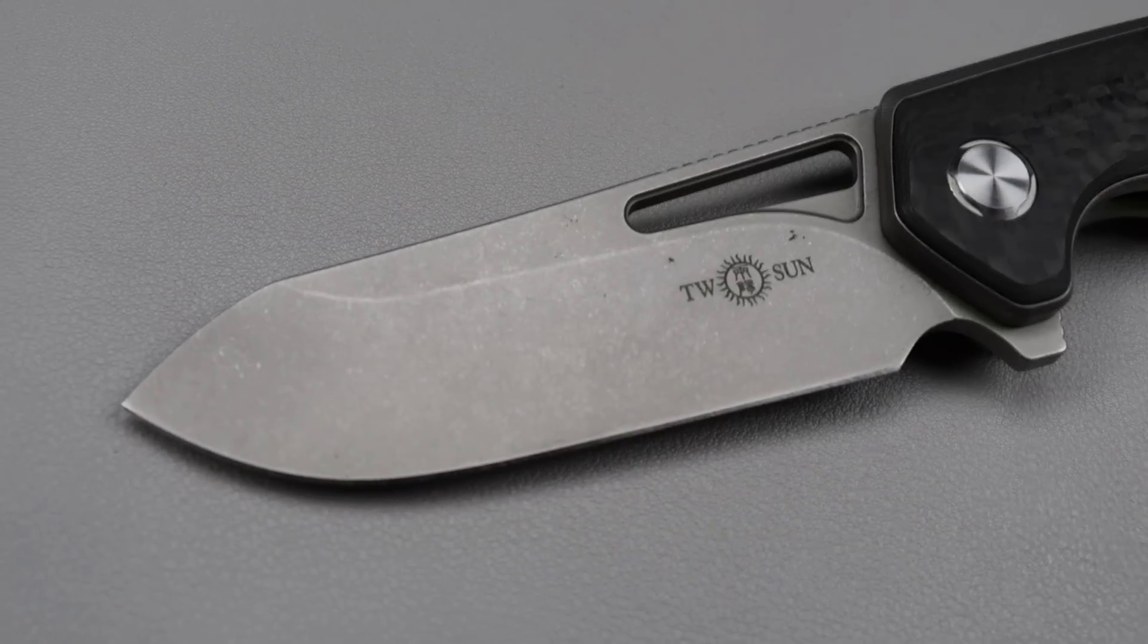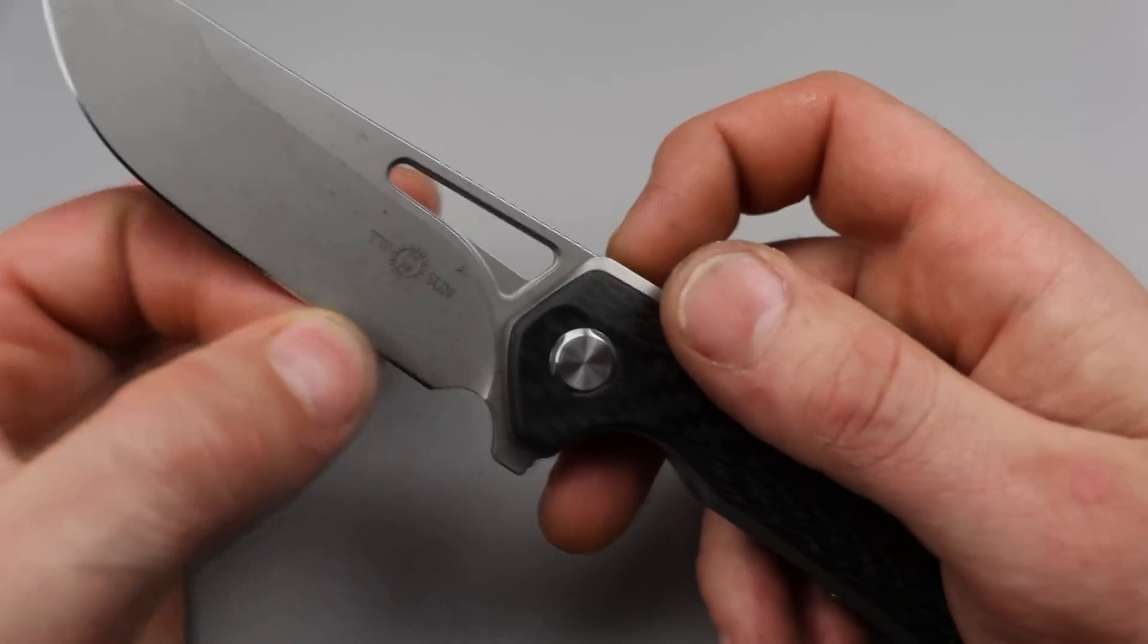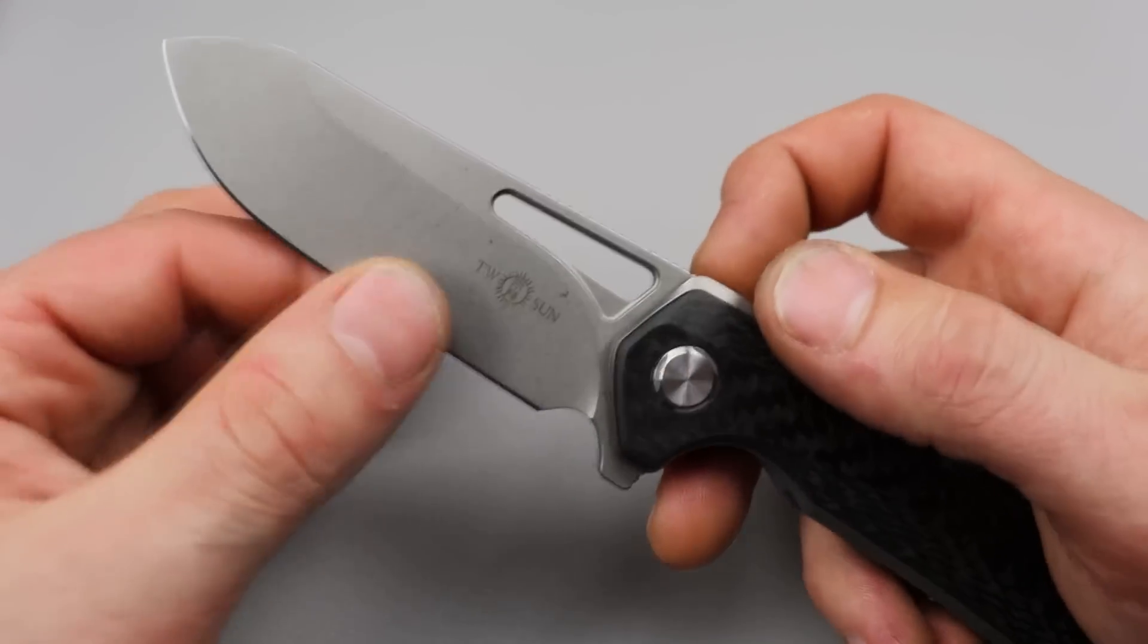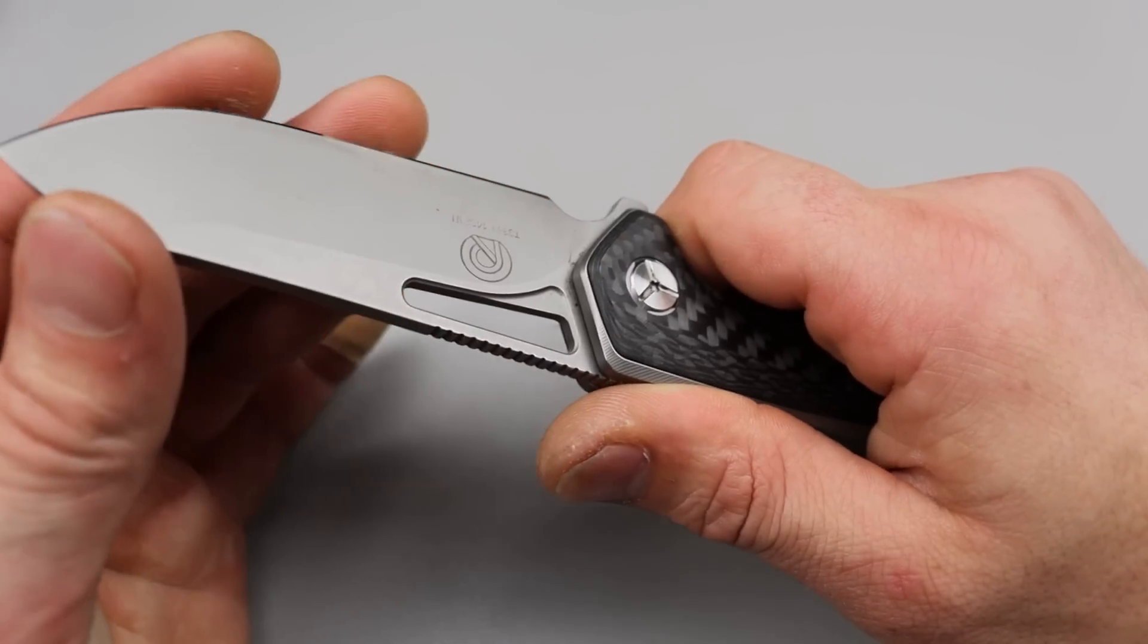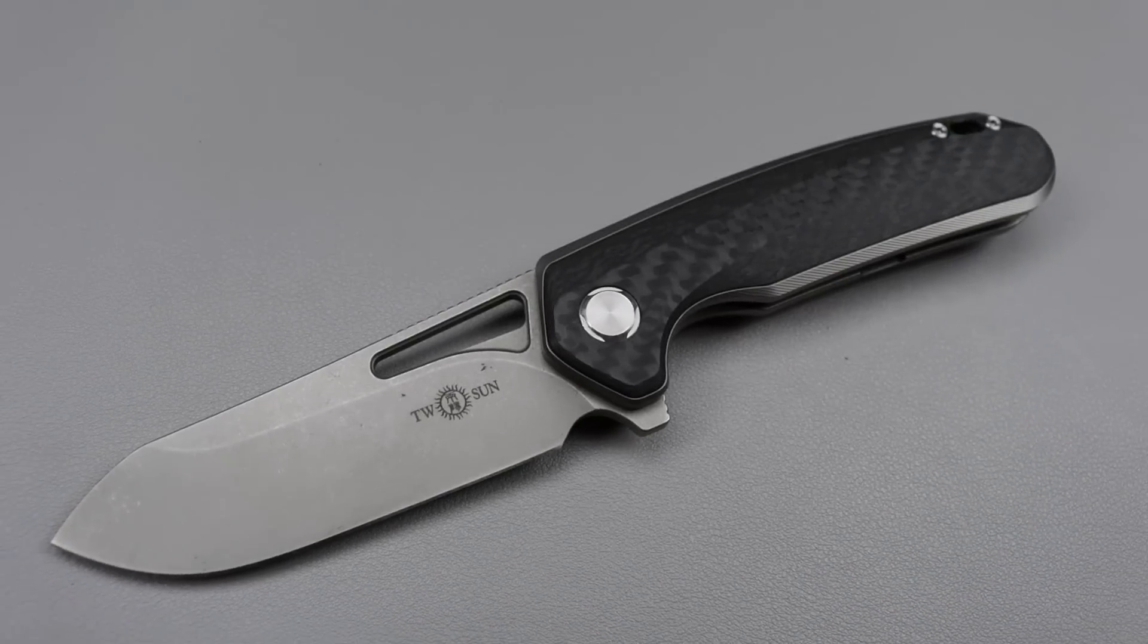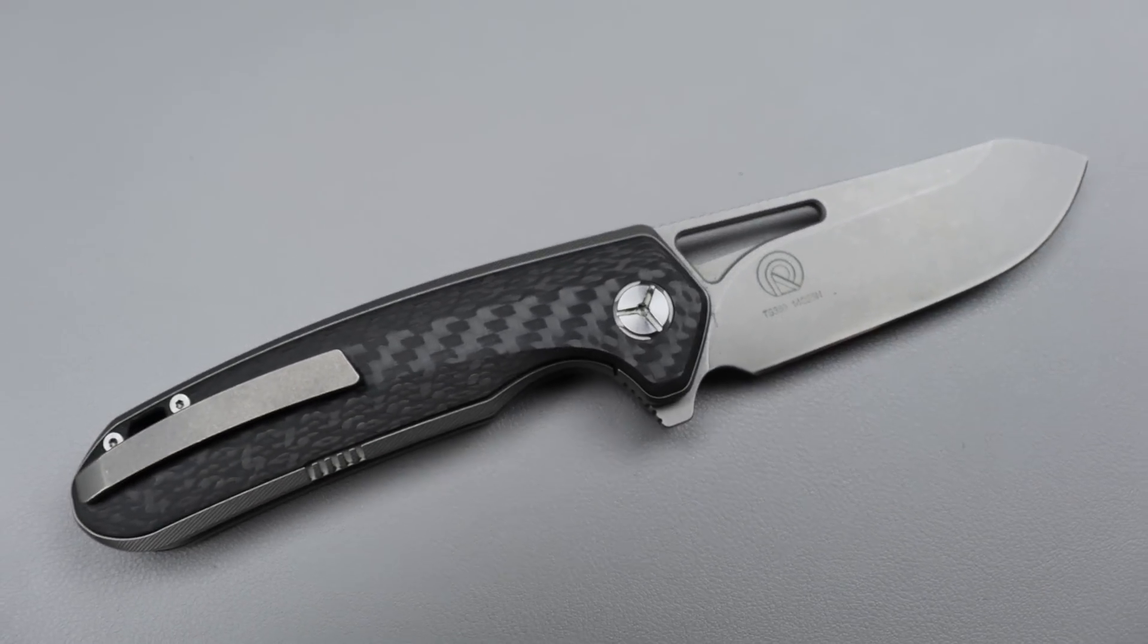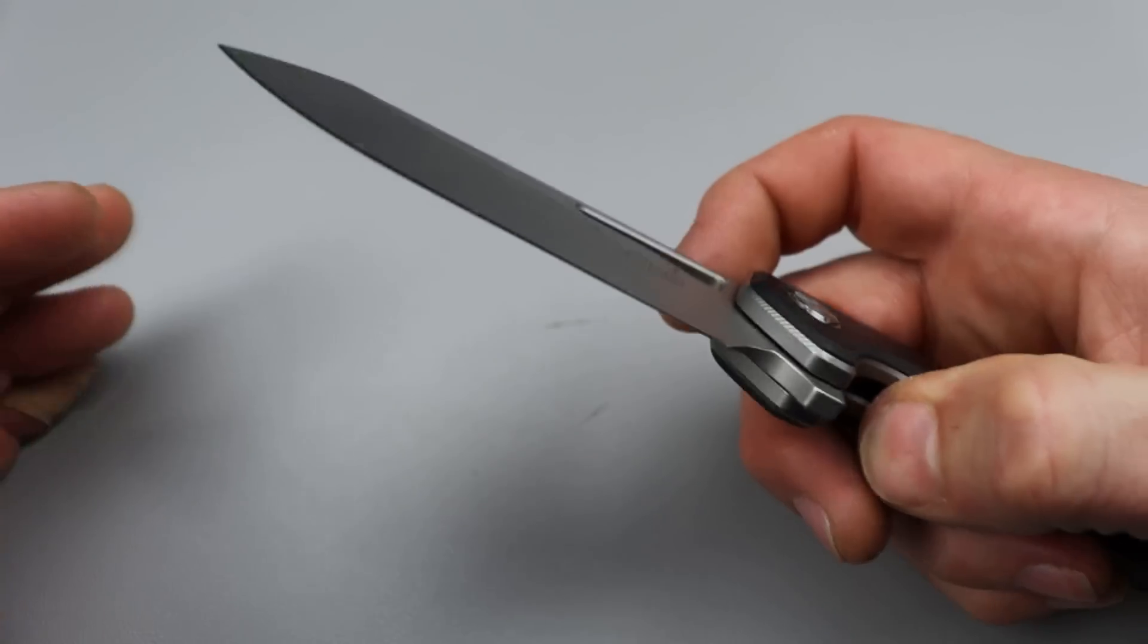You have a super tough steel, 14C28N, robust geometry that does get down thin behind the edge. So it's going to cut really well. And it did take a very sticky, nasty, sharp edge. But it's going to cut really well. But at the same time, you're not going to worry about breaking this blade. This is definitely a blade you can maybe do a little light-duty prying with.